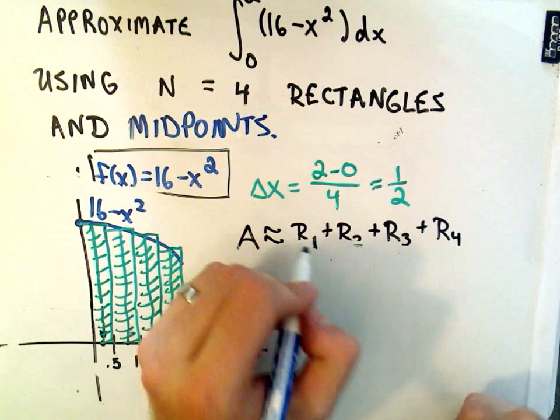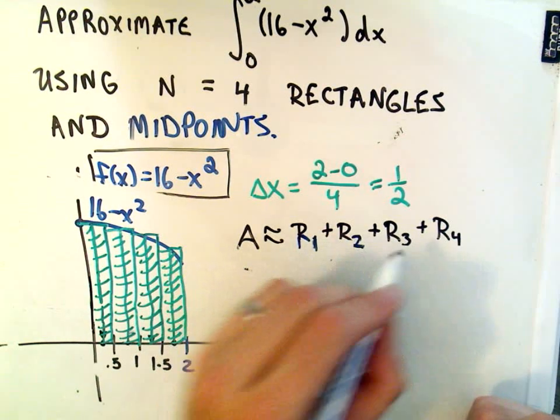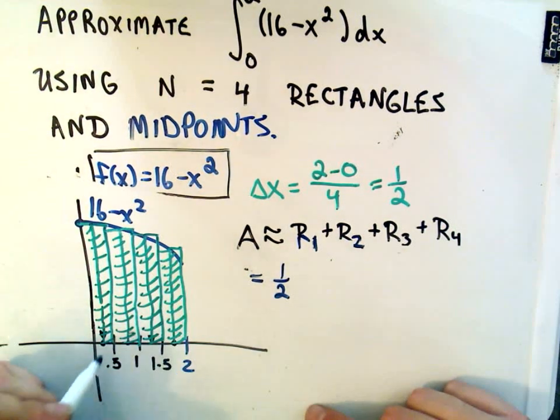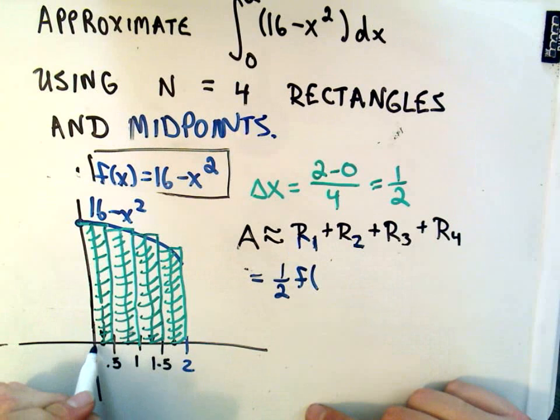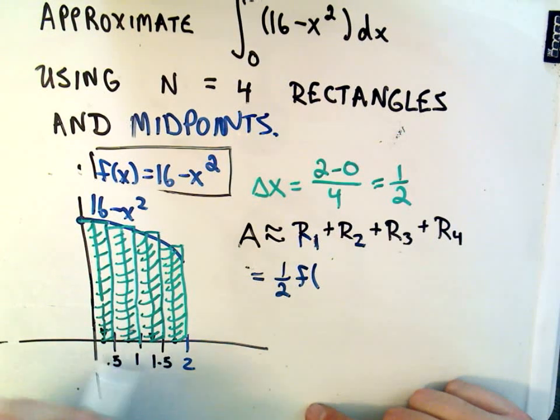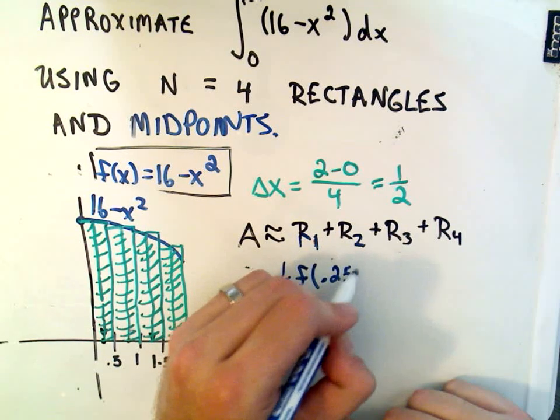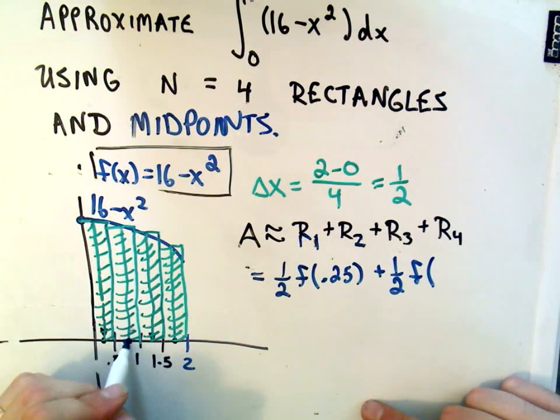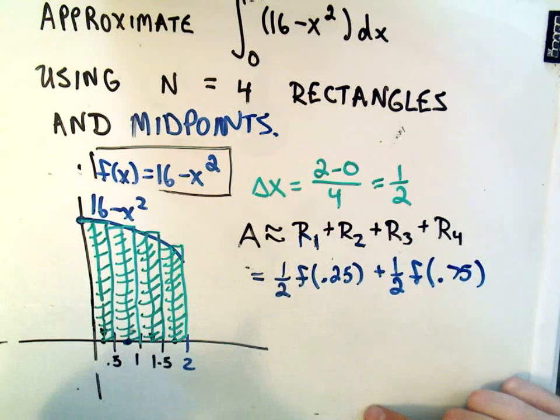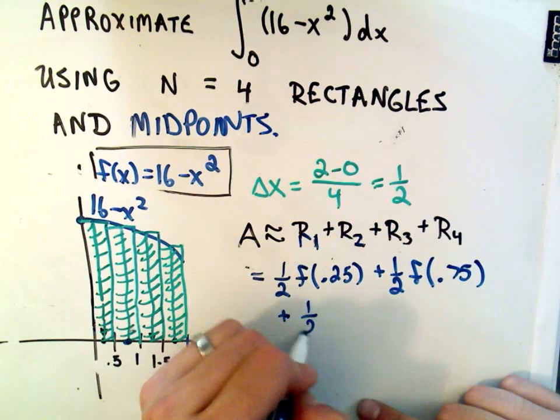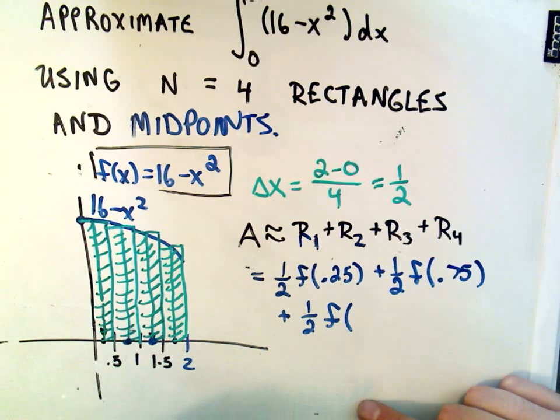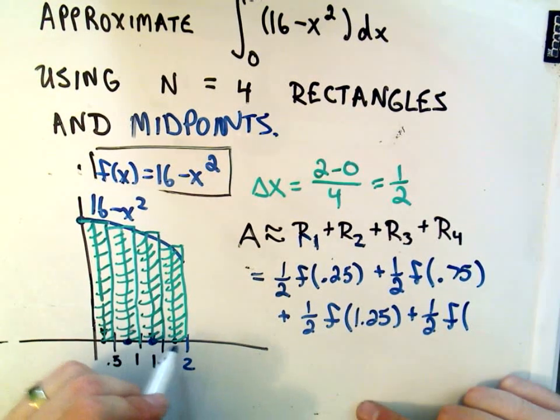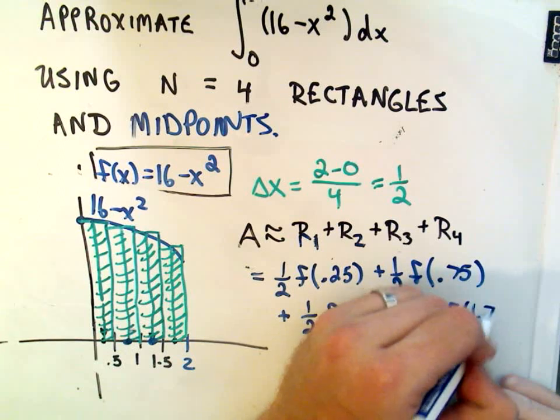Everything's the same. We're still adding up areas of rectangles. Rectangle 1 plus rectangle 2 plus rectangle 3 plus rectangle 4. The only thing that's changed, the width is still the same. But to get the height, notice from the first interval, that's from 0 to 0.5. Well, the midpoint is going to give me the height of the function. So I would need to plug 0.25 in. My second rectangle, I would have 1 half times, I would take the midpoint, which would be 0.75. Rectangle 3 would have width 1 half. To get the height of it, we would plug the midpoint in, or 1.25. And for the last rectangle, that's 1 half f of 1.75.